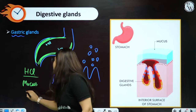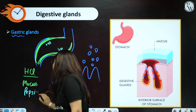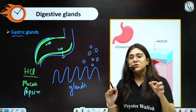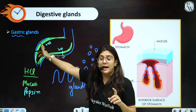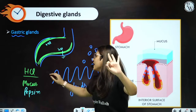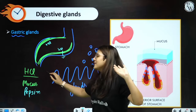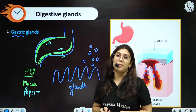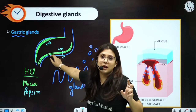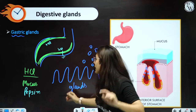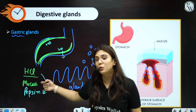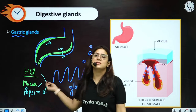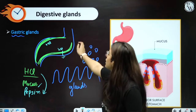One more enzyme secreted by gastric glands is pepsin. Pepsin is going to digest the proteins — the dal you are having, the proteins you are having will be digested by this enzyme, particularly pepsin. So: HCl is an acid, it will kill all the germs and make the medium acidic in the stomach. It is important to create acidic medium because pepsin, which digests proteins, will be activated once the medium is acidic. And mucus is the saviour, protecting the walls of the stomach from HCl.